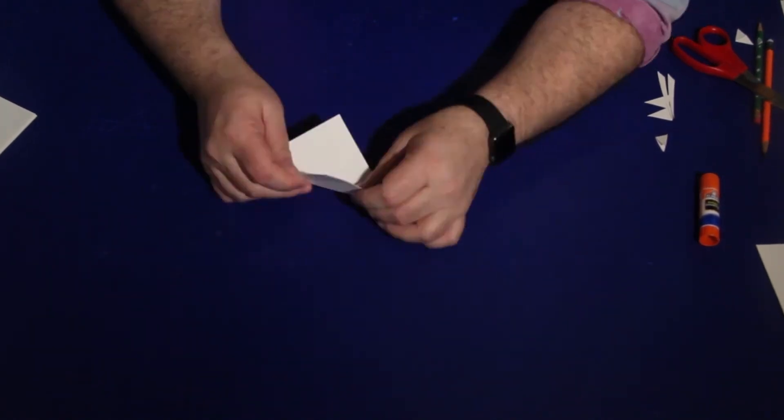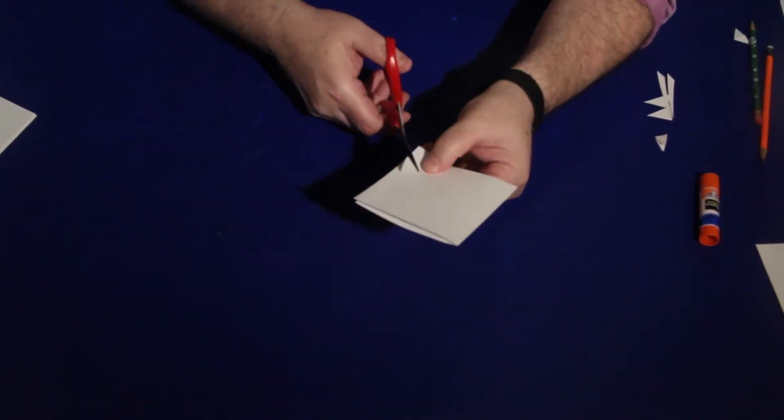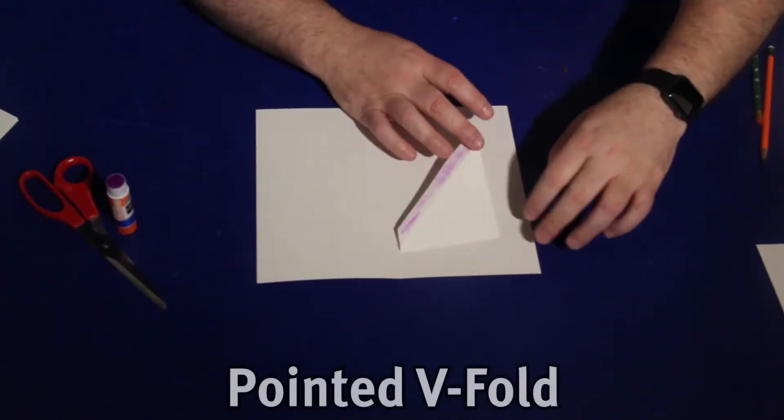By folding and cutting tabs on the strip along the diagonal creates a special acute angle V-Fold called a pointed V-Fold.